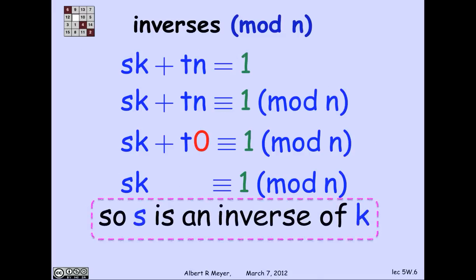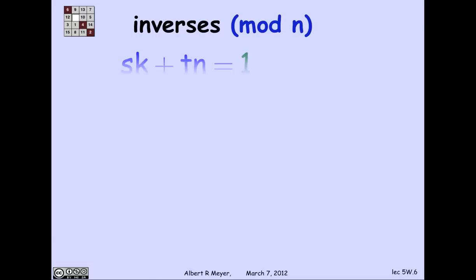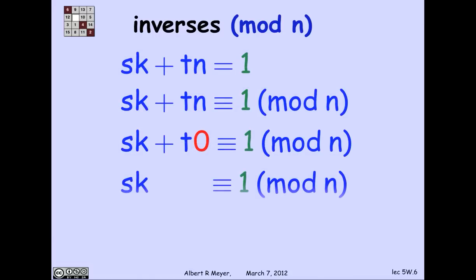Let's look at that slightly more carefully and see what's going on. I have that s k plus t n is 1. So that means, in particular, since they're equal, they're certainly congruent to each other modulo n. s k plus t n is congruent to 1 mod n.